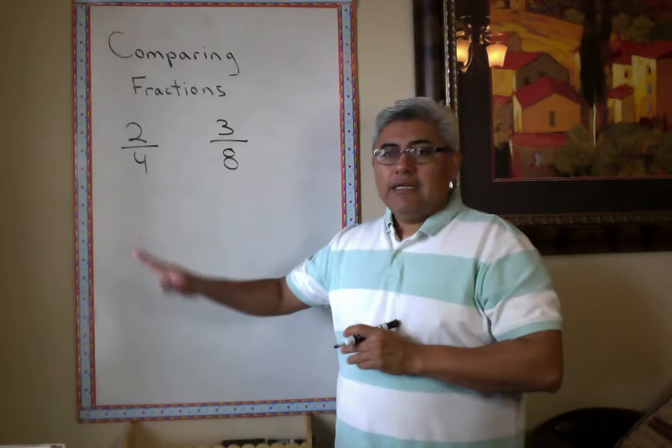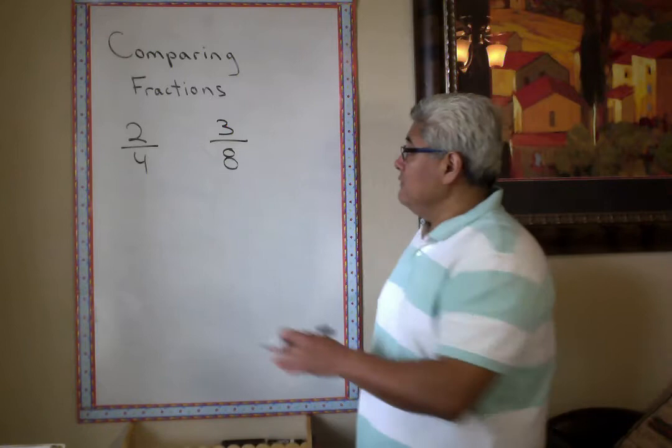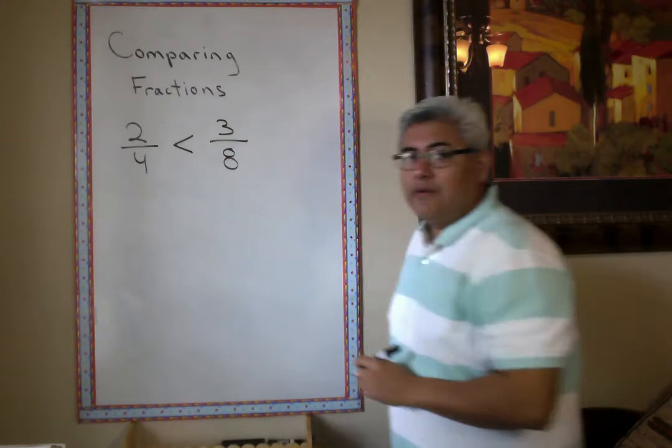A lot of kids always see the numbers and they say, well, 3 is bigger than 2, and 8 is bigger than 4. So everybody assumes that, okay, well, these are bigger numbers, so this has got to be the biggest fraction, right?